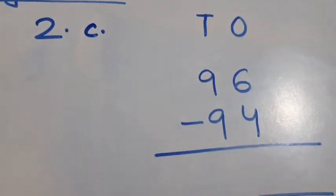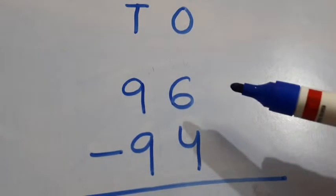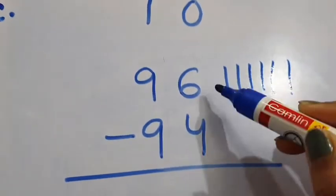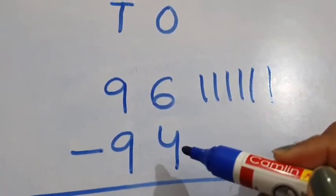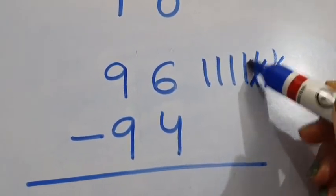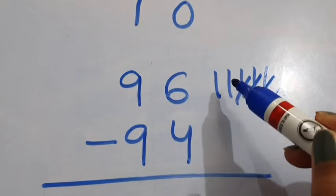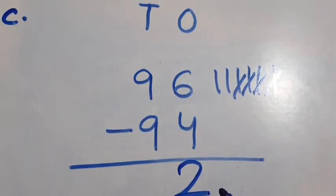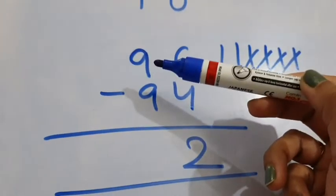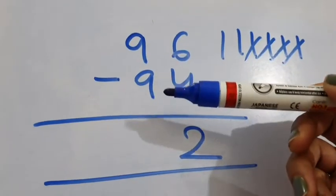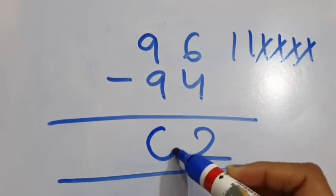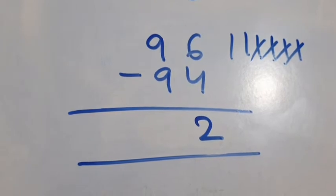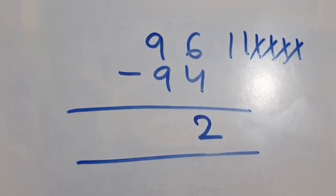2C: 96 minus 94. See the 1's column: 6 minus 4. Draw 6 lines and out of these 6 lines, we have to remove 4 lines. So 2 lines are left. We will write 2 in the 1's column. See the 10's column: 9 minus 9 is 0. Either we can write 0 here or we can simply write only 2 — both are correct. So 96 minus 94 is equal to 2.